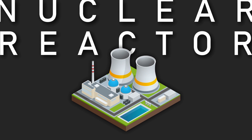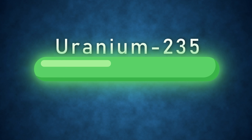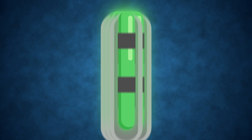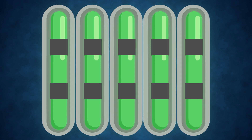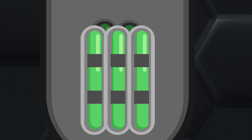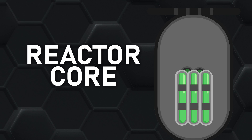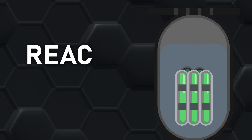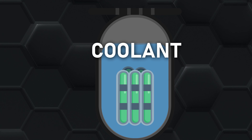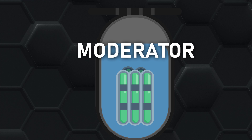We'll take some nuclear fuel like uranium-235, put it inside a bunch of thin rods, and put the rods inside a tank — this will be our reactor core. Inside the core we'll add a coolant, often water or molten salt, which will also serve as a moderator.